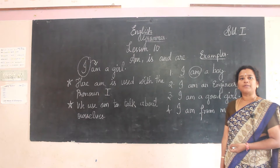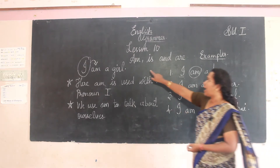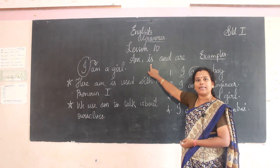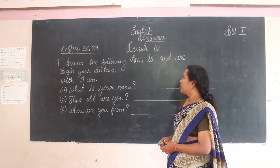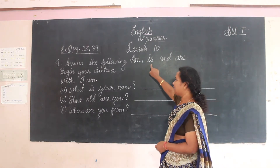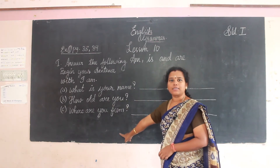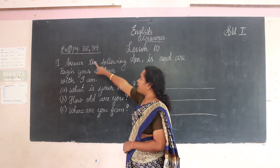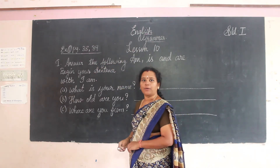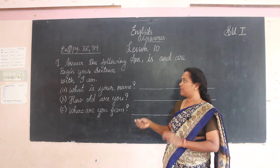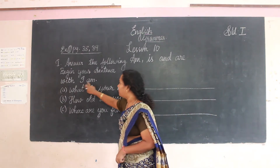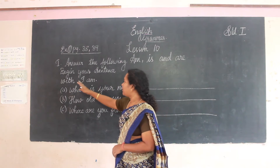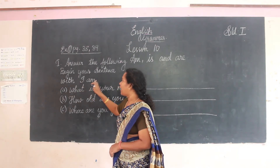So next we are going to see 'is'. I have finished 'am', now I am going to teach you where to write 'is'. Before starting 'is', I am giving some exercise from our English grammar book, page number 38 and 39. We have to rewrite the sentence, beginning the sentence with 'I am'.